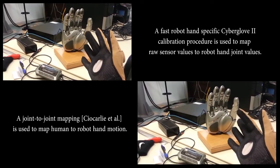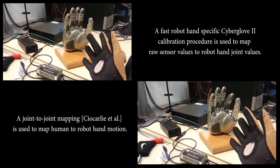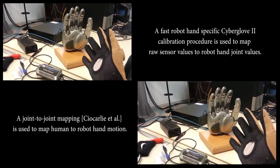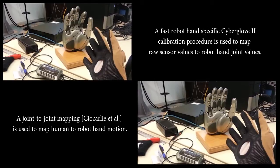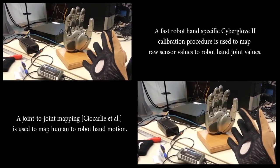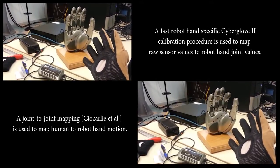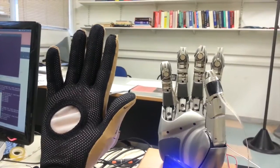In order to map human-to-robot hand motion we use the well-known joint-to-joint mapping with a fast Cyberglove calibration procedure which is robot hand specific and maps the raw Cyberglove values to robot hand joint values.